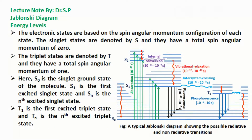The electronic states are based on the spin angular momentum configuration of each state. The singlet states are denoted by S and they have a total spin angular momentum of 0. The triplet states are denoted by T and they have a total spin angular momentum of 1. Here, S0 is the singlet ground state, S1 is the first excited singlet state, Sn is the nth excited singlet state, T1 is the first excited triplet state, and Tn is the nth excited triplet state.